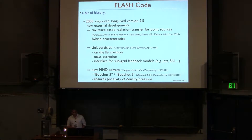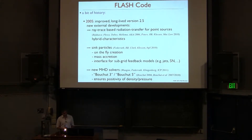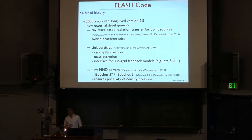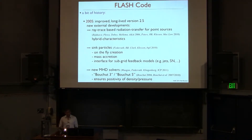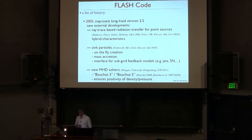They also started to include sink particles, extending Paul Ricker's tracer and dark matter particles so you can create these particles on the fly, let them accrete mass, and use them as proxies for protostars or little stellar clusters. Another group included new MHD solvers because the 8-wave solver broke down for high Mach numbers, producing negative densities and pressures. The new solver is called the Bouchut solver, which ensures positivity of density and pressure, making the code more stable for high Mach number regimes.